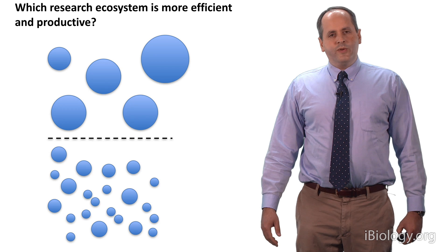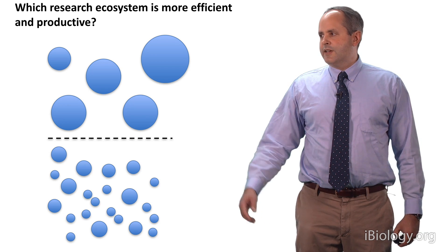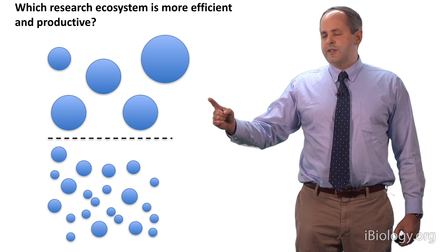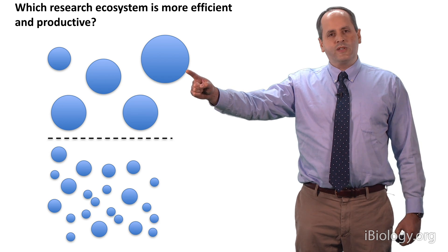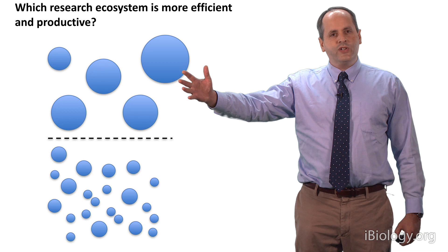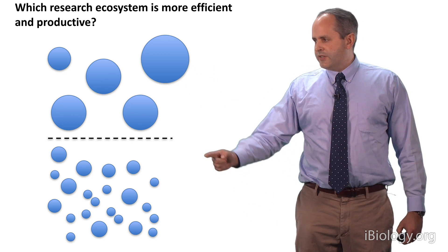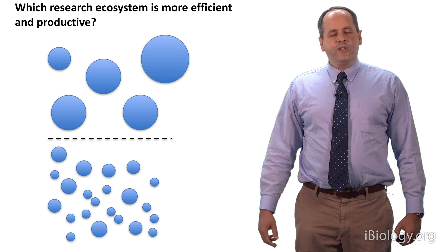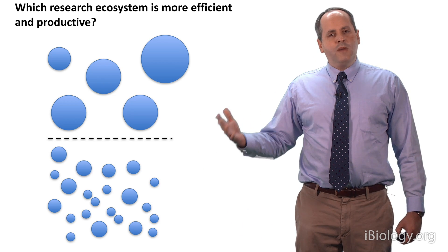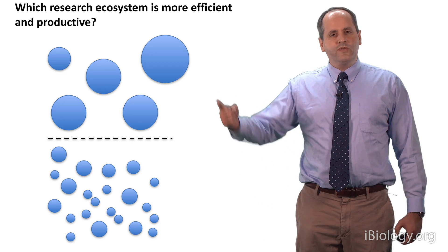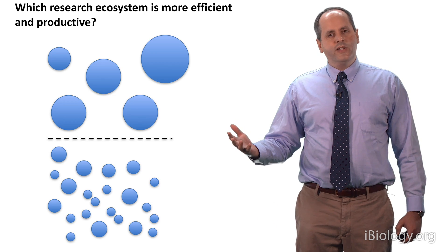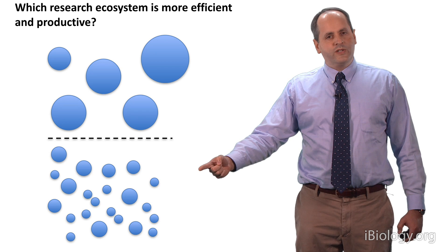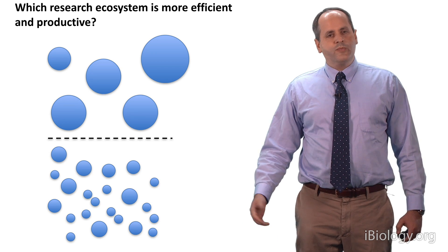We can think about this with two extreme cartoons. The first is shown at the top, which is a research ecosystem in which there are a small number of larger research groups. Each of these circles represent a research group, and its size represents the size of that group. And the question we want to ask is, is this an efficient and productive ecosystem? The other ecosystem is shown at the bottom, in which there are a larger number of more moderately sized research groups. The question is, which of these two models is a more efficient and productive one? You can think a priori of a number of reasons that this bottom system might be a more efficient and more productive system.